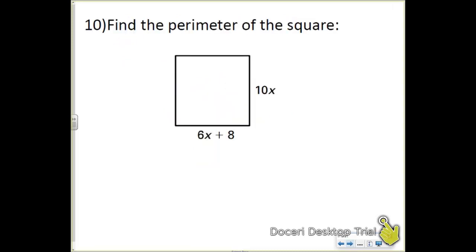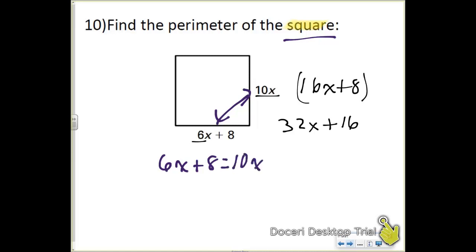The last question here says find the perimeter of the square. And of course the word square is kind of a key word here. A lot of people did take their 10x's, add it to their 6x's, called that 16x's plus 8. And then they just doubled the whole thing because they realized this was only half the perimeter and they gave me 32x plus 16. Now that is correct. That's its algebraic expression. However, since this is a square, we do know that these two sides are equal to each other, which means we can actually solve for the value of x. So 6x plus 8 equals 10x.